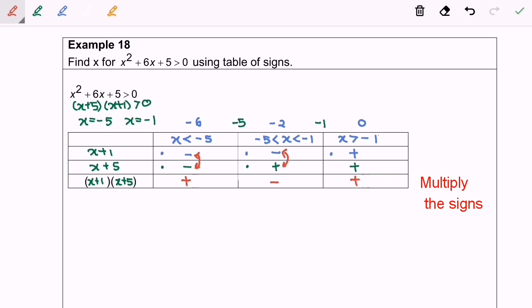Finally, we select the intervals based on the question. Since we need where the expression is positive, our answer is: from negative infinity to -5, where -5 is not included, union with -1 to infinity, where -1 is not included.